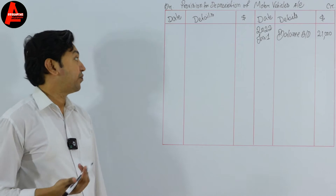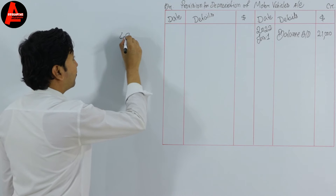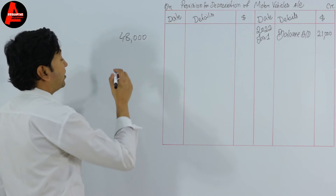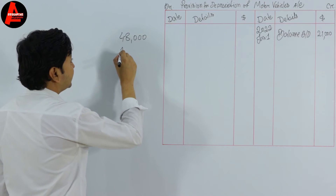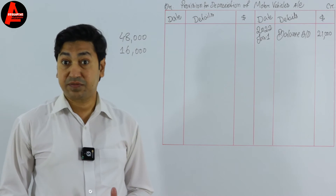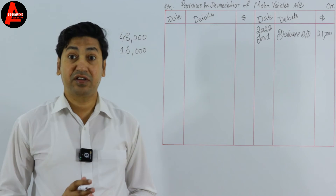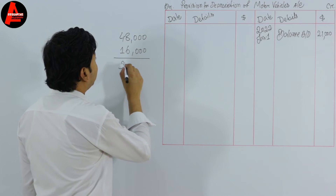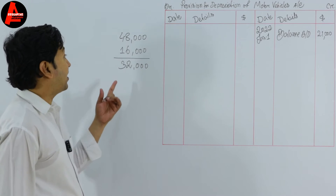The $48,000 is the closing balance of motor vehicles at 31st December. Since Stella already sold a vehicle that cost $16,000, we subtract that cost price — not the selling price — from $48,000. This gives us $32,000, which is the cost of the remaining motor vehicles.